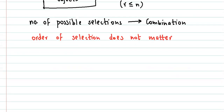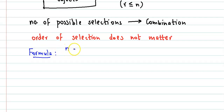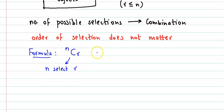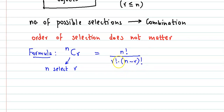Next is the formula for combination. The combination notation is given by nCr, and the number of selections is calculated as n factorial divided by r factorial into n minus r factorial. This is the formula to calculate the number of possible selections of r objects out of the total n objects.